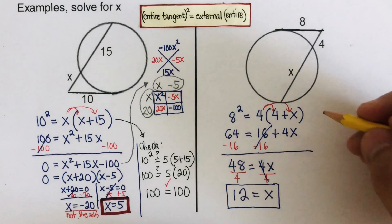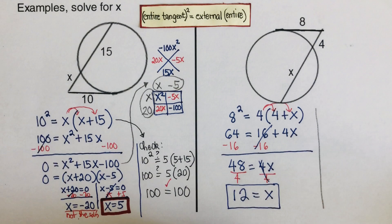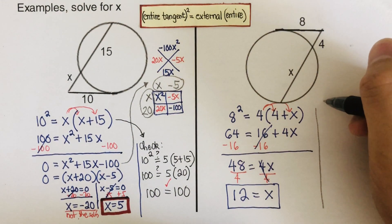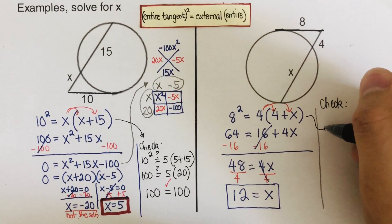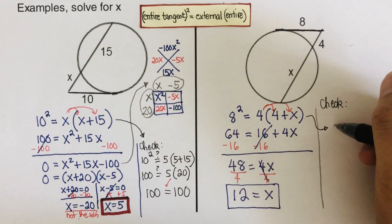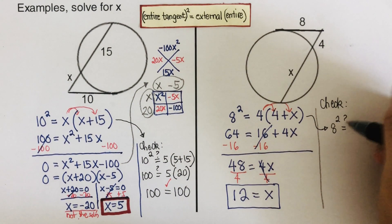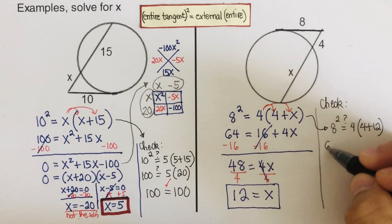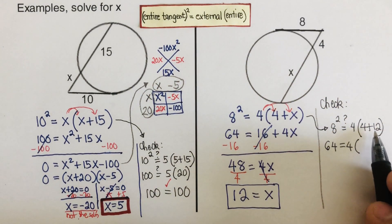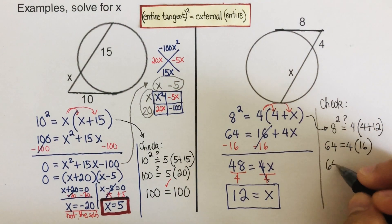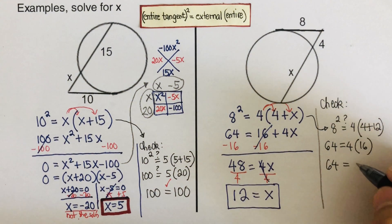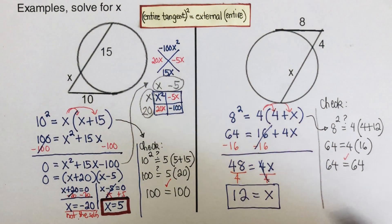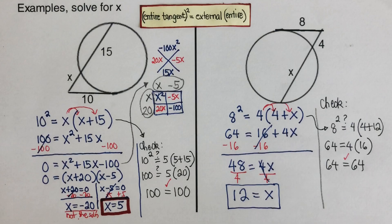Let's verify x = 12. Plugging into the original equation: 8² = 4 × (4 + 12) → 64 = 4 × 16 → 64 = 64. Our answer of x = 12 is confirmed correct.